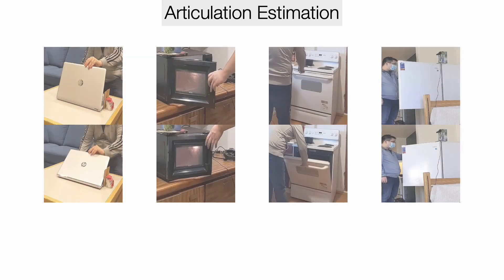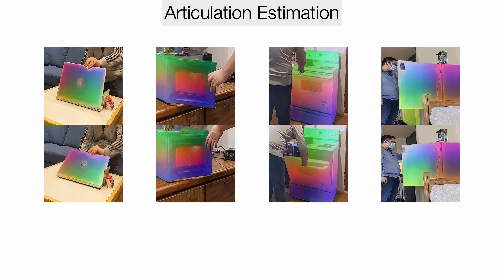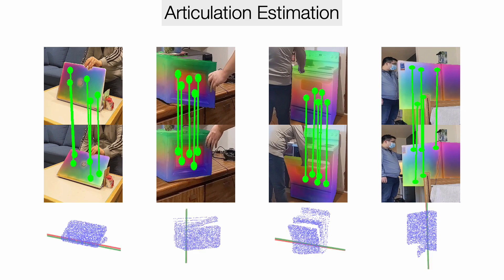Then we demonstrate the application to articulation estimation. Given a pair of images of an articulated object before and after an interaction, our model predicts dense correspondence, and we use least squares to directly estimate the articulation axis of these objects. Our model is never trained with ground truth articulation information.